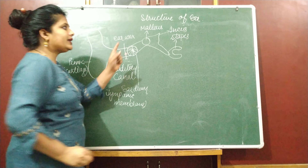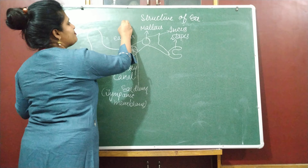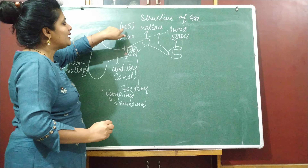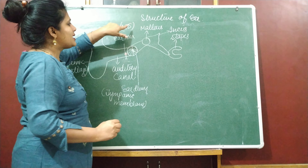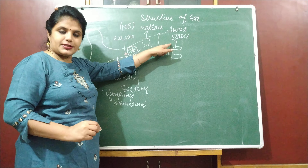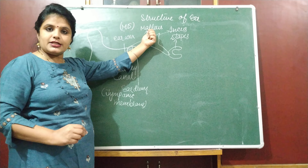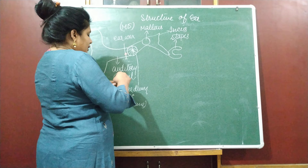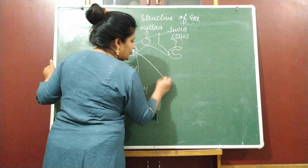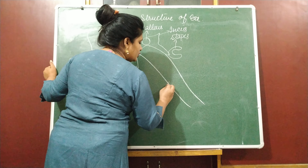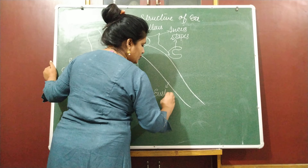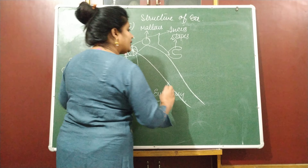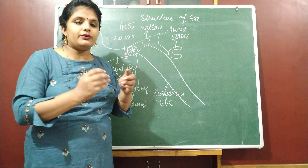The human ear is divided into three parts. The first is called the external ear. This entire structure is the external human ear. This structure which is visible to us — this part is called the pinna. And the part inside it is the auditory canal, also called the ear tube.